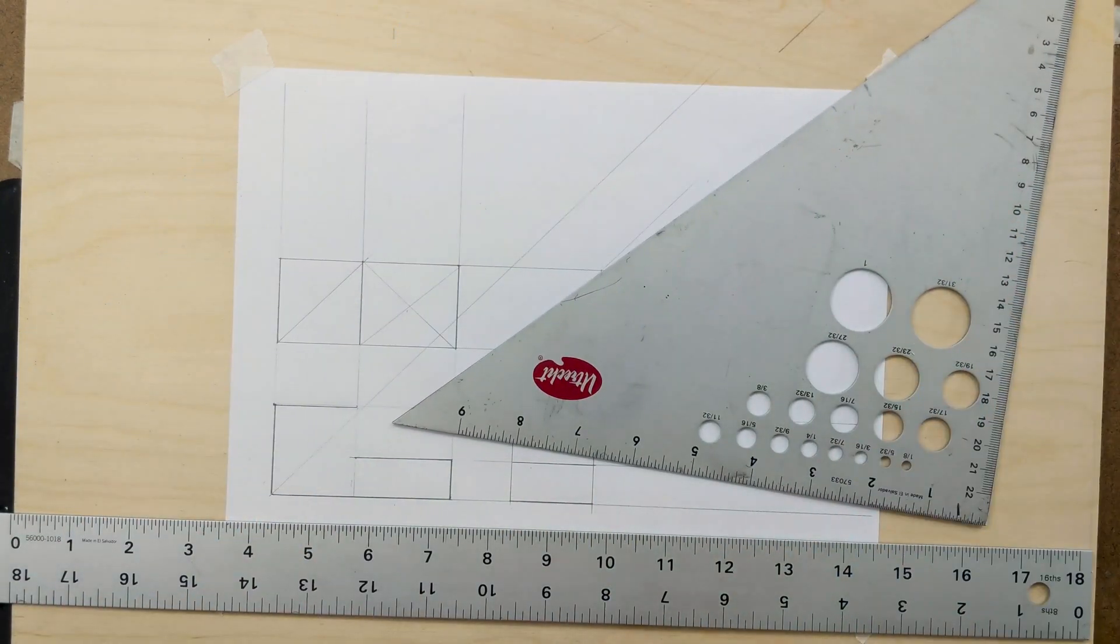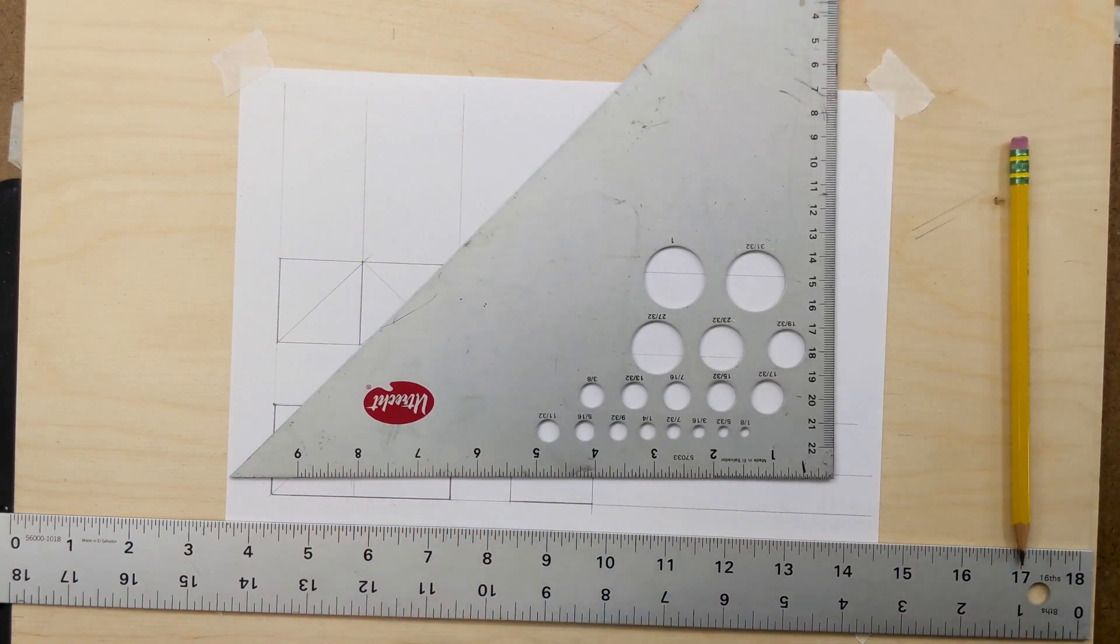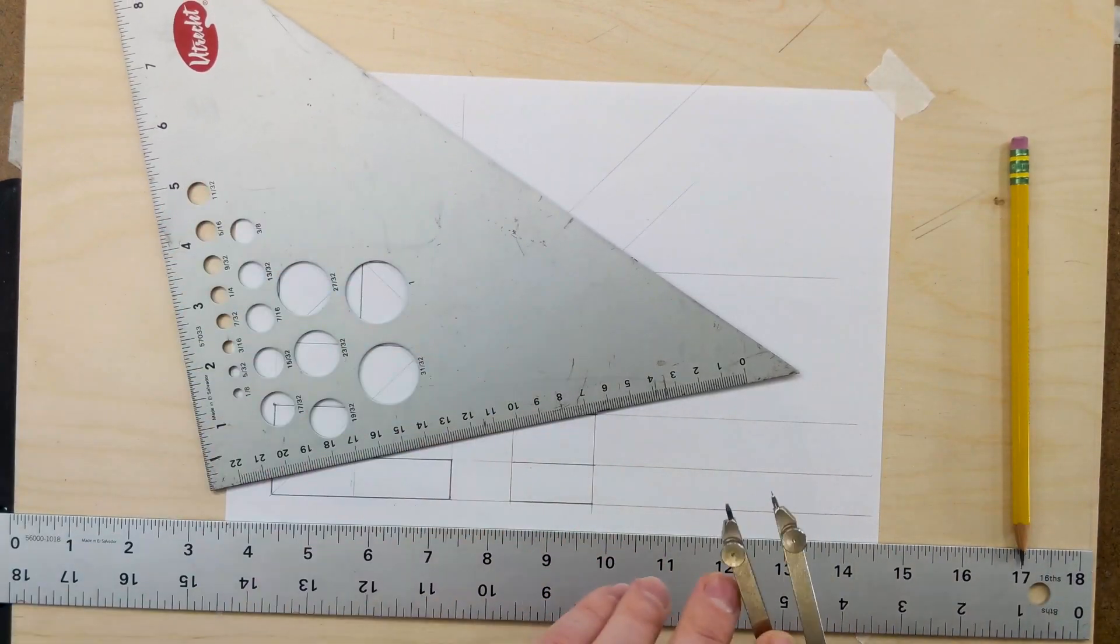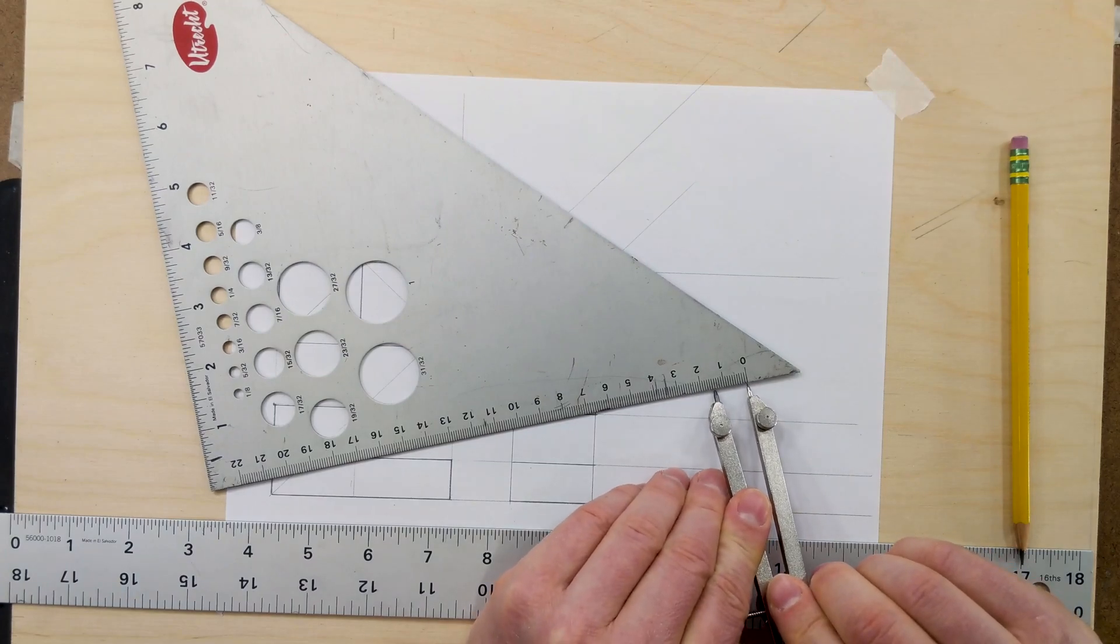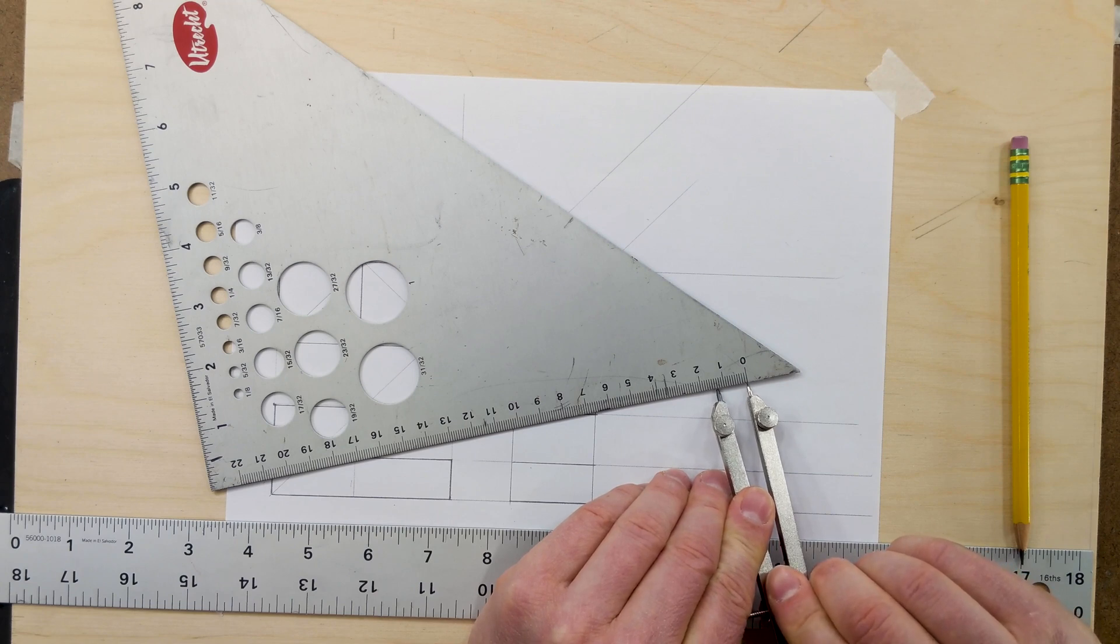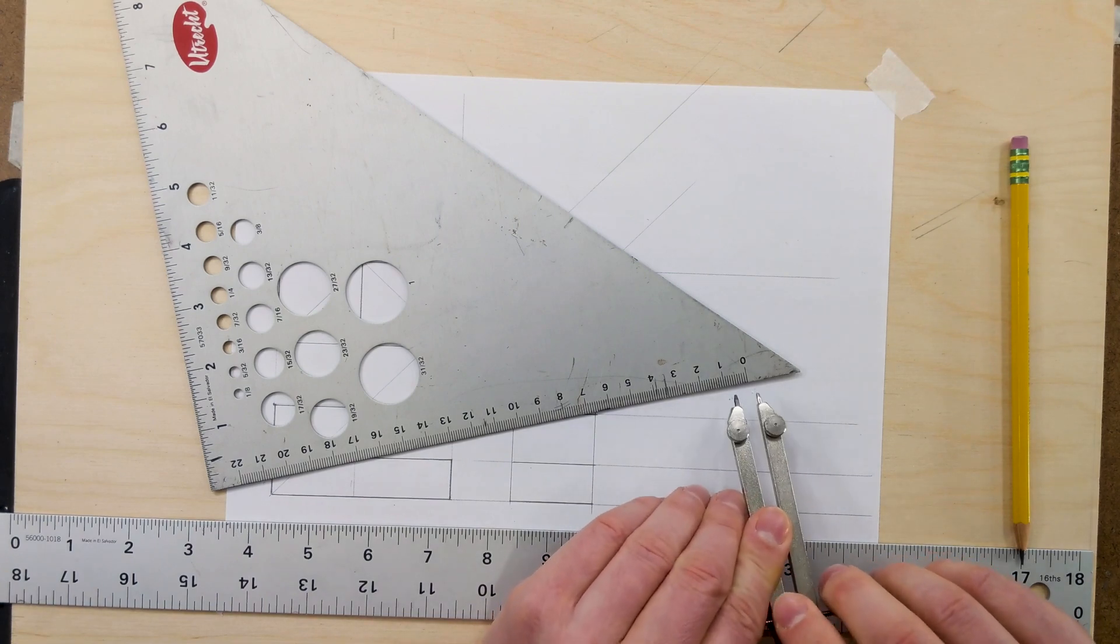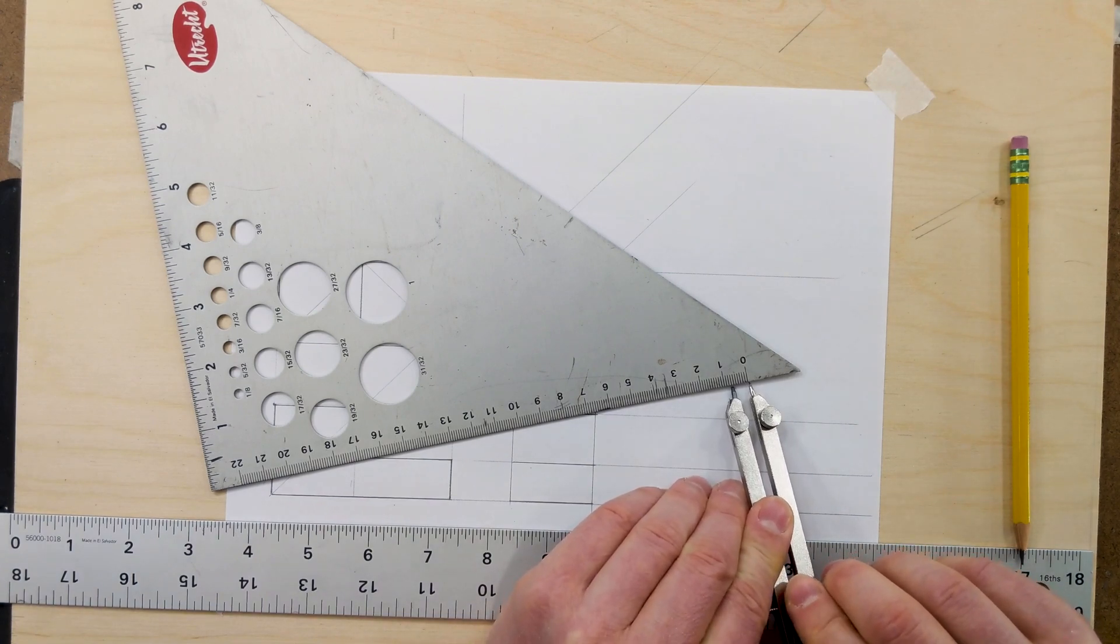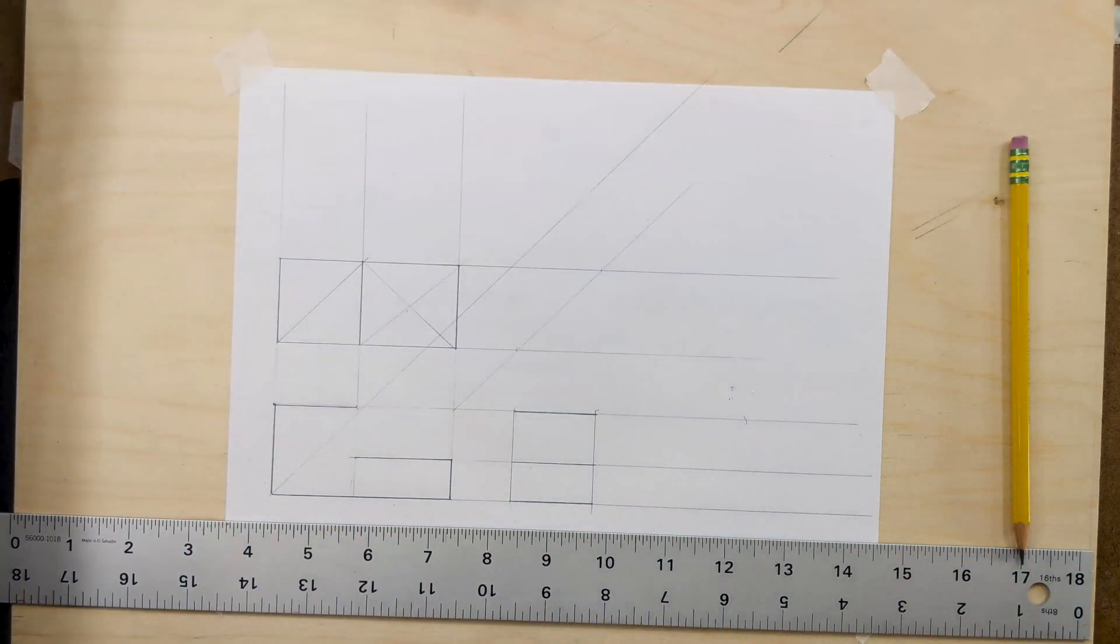Now we just have to draw our circle. And our circle is 14.4 millimeters, so we'll go ahead and move our compass to be that size. And diameter, so that'll be 7.3, approximately that size. Now we can draw our circle.